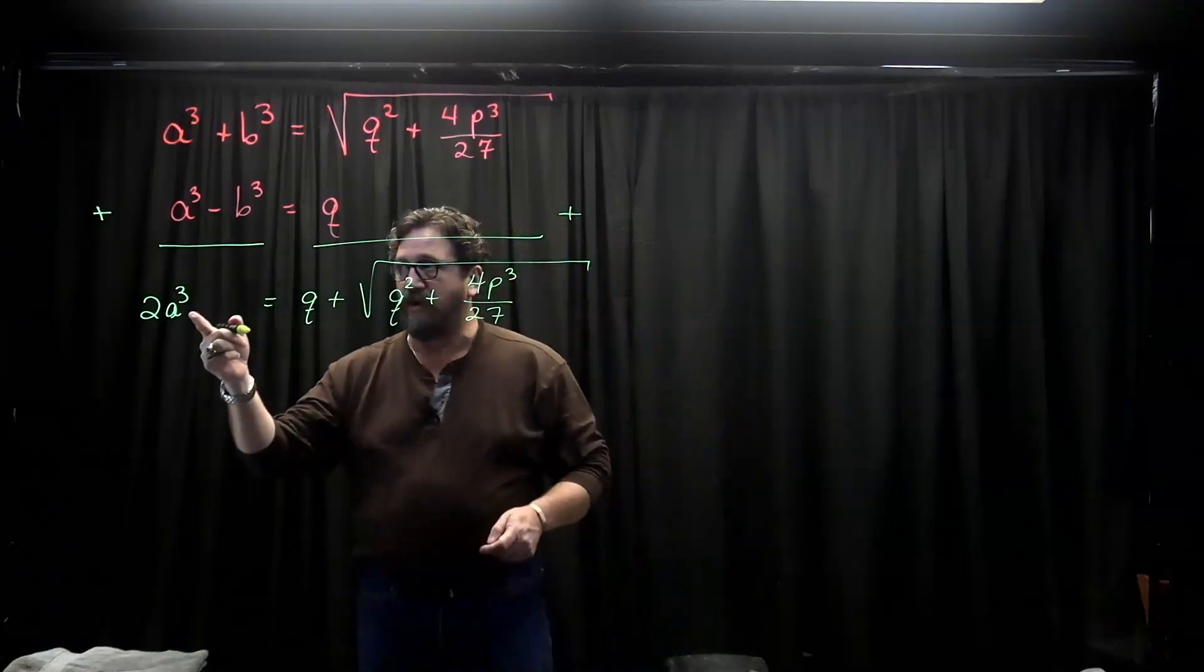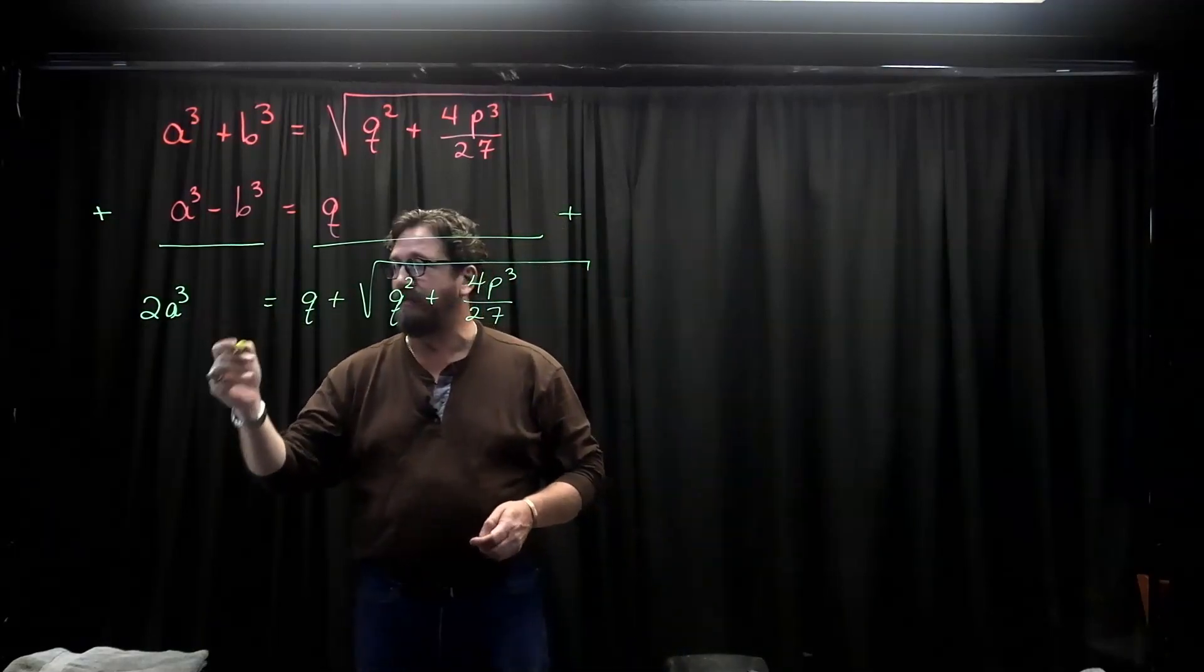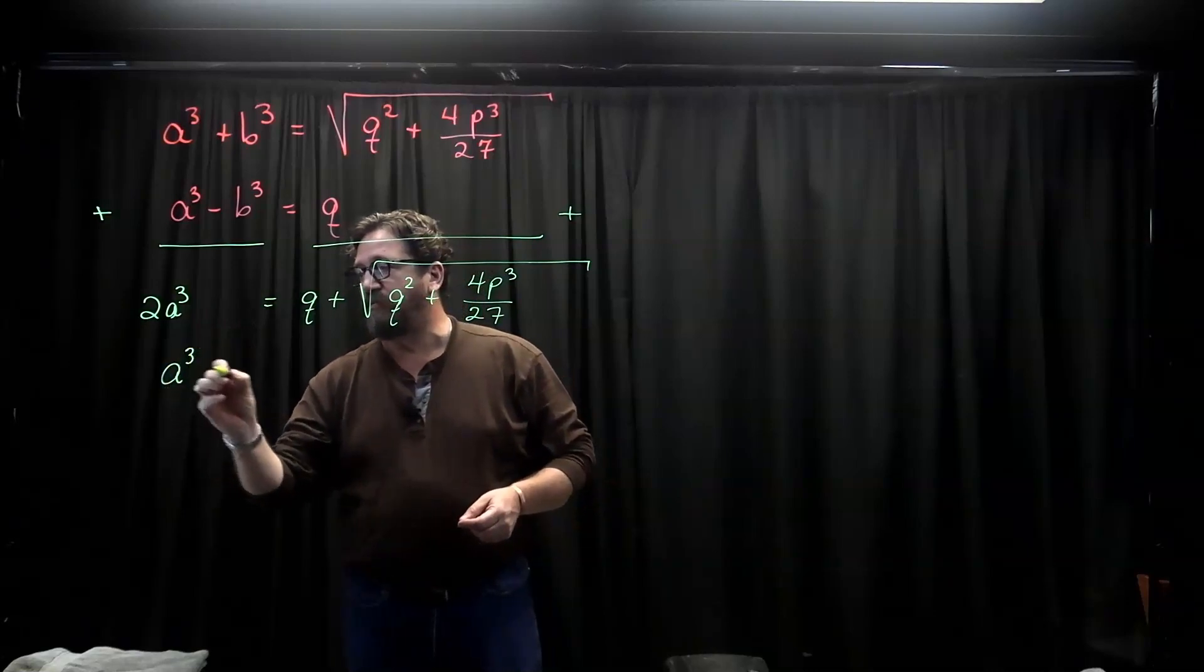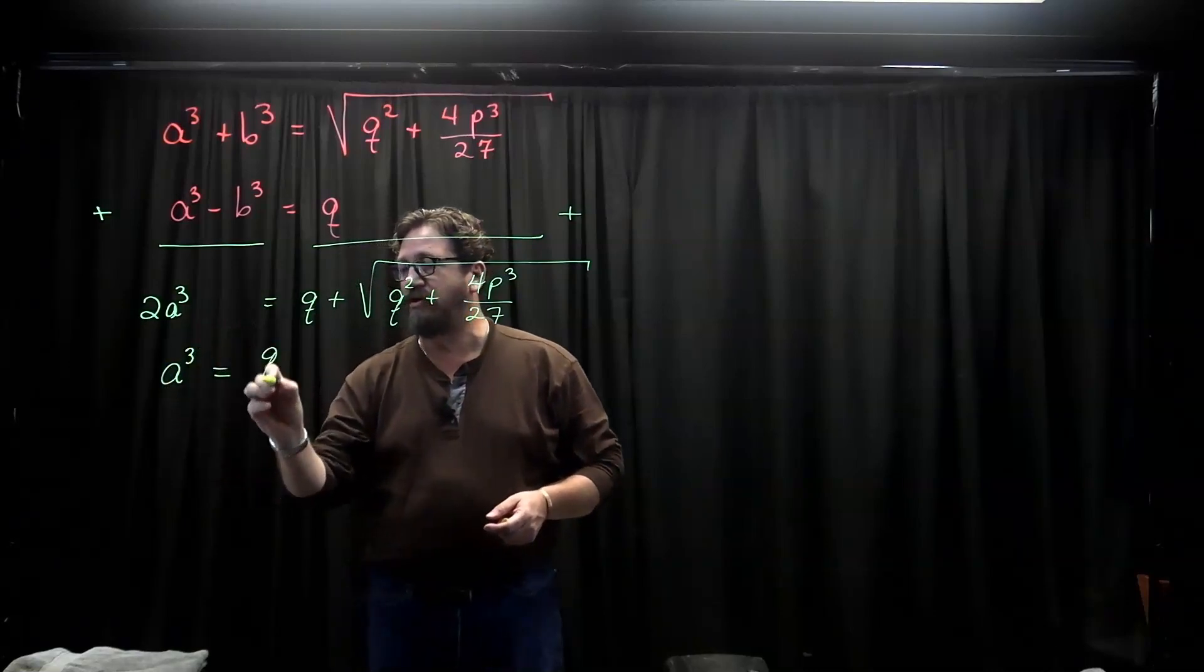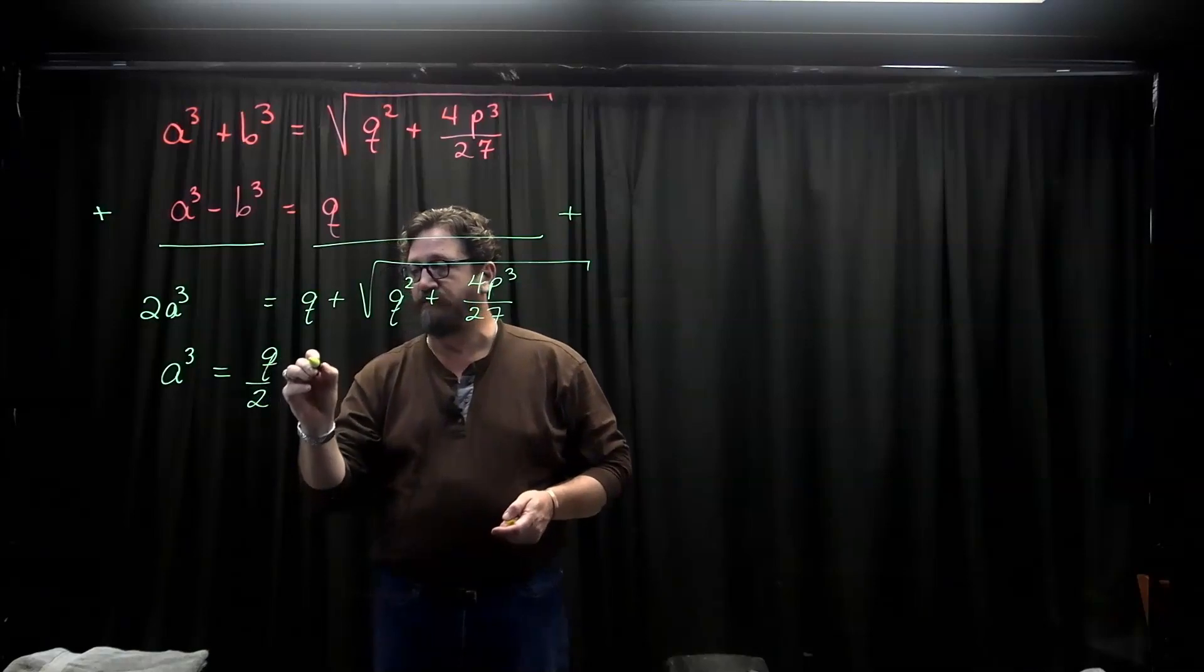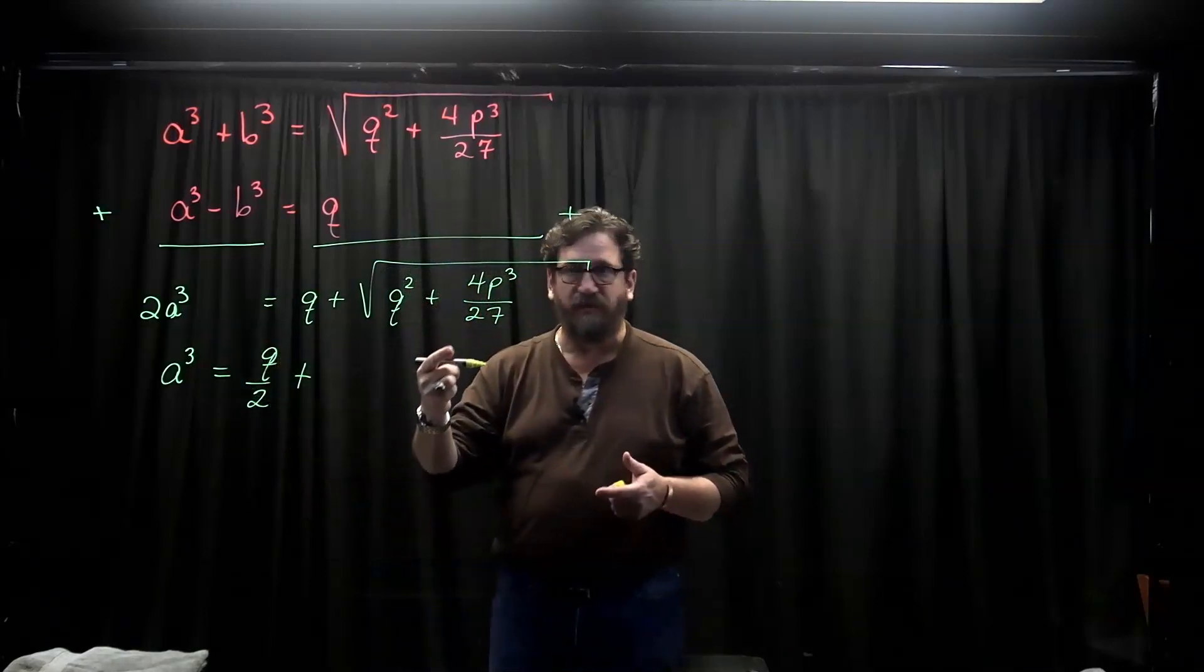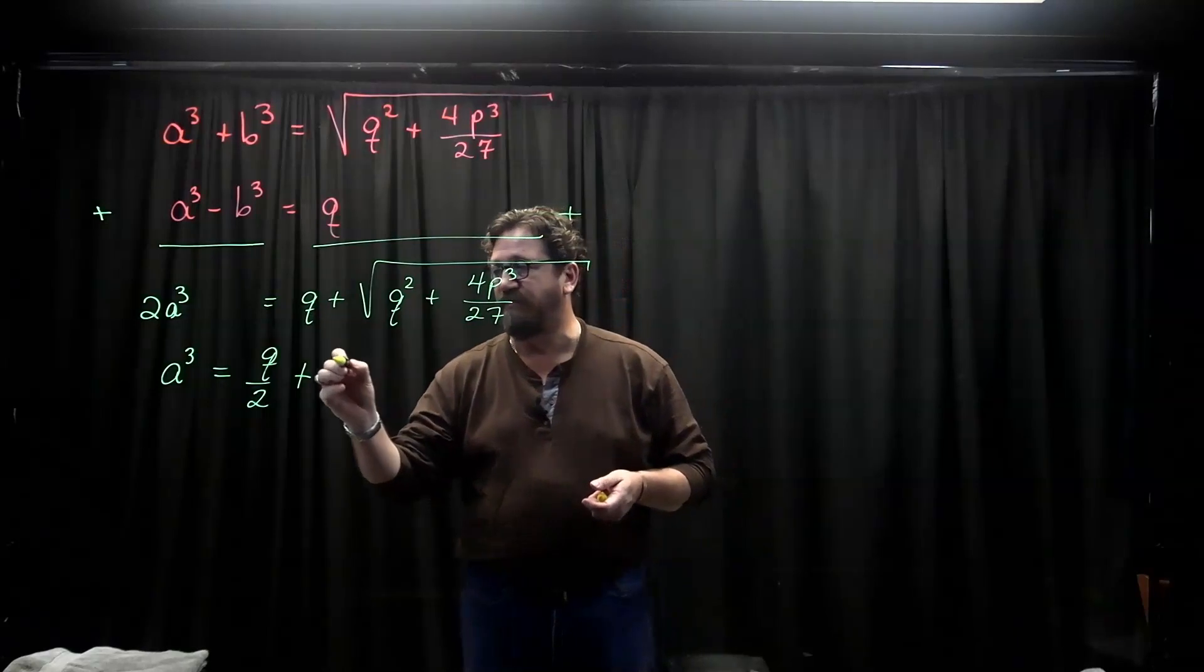Now, I'm going to solve for a cubed. So a cubed is going to become q over 2 plus, and when the 2 goes underneath the radical, it's going to turn into a 4.